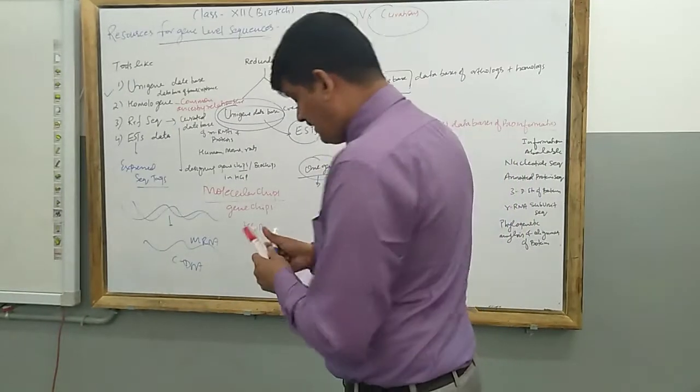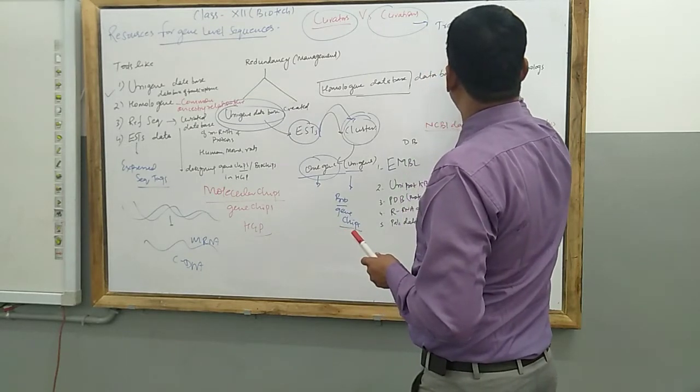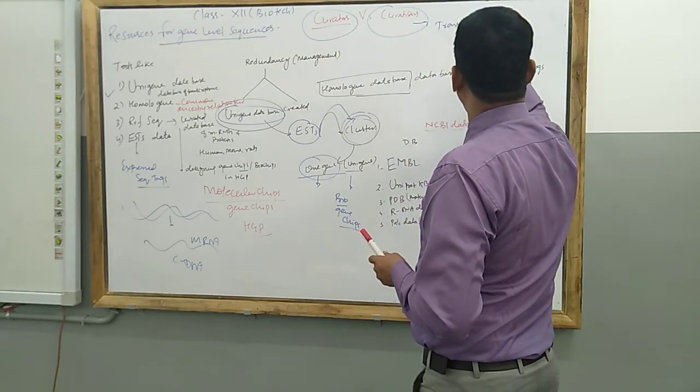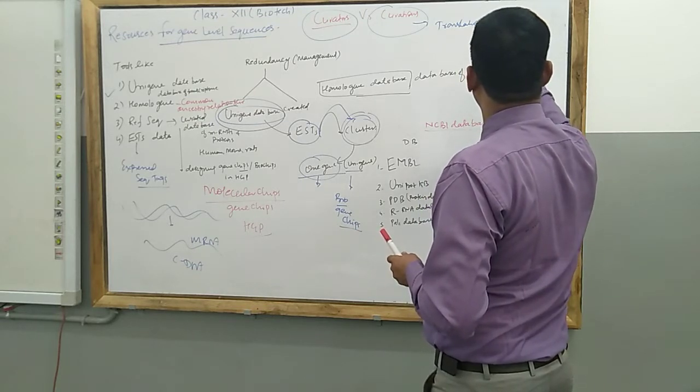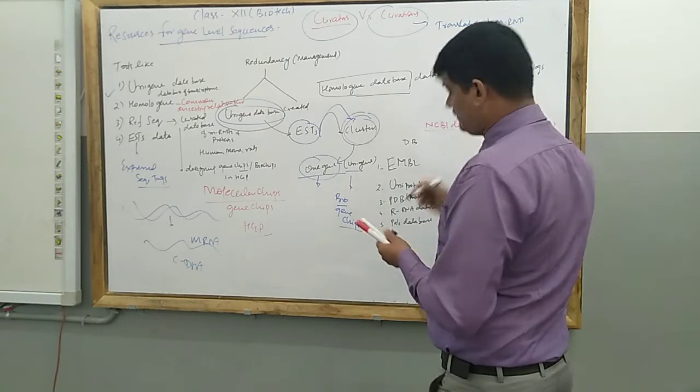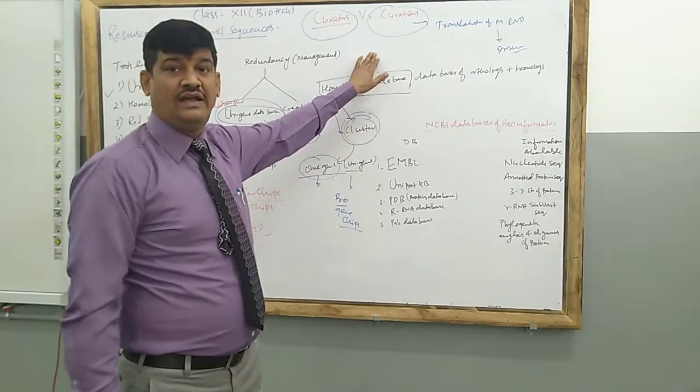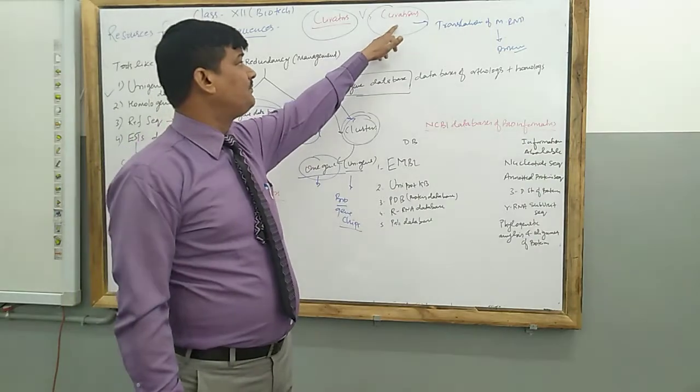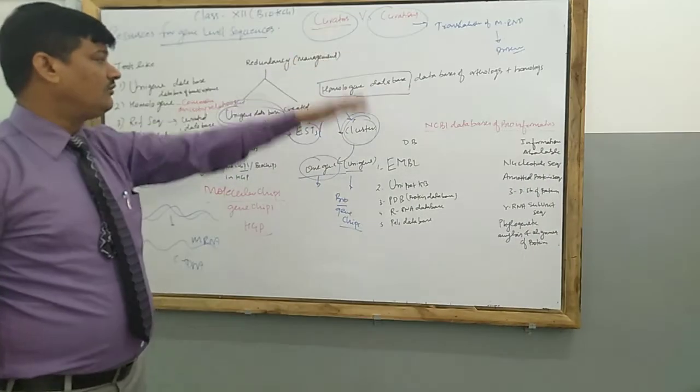What is curation? This curation is a process of translation of mRNA gene into the functional protein or functional part. Translation is based on translation rules and that conversion is known as curation.